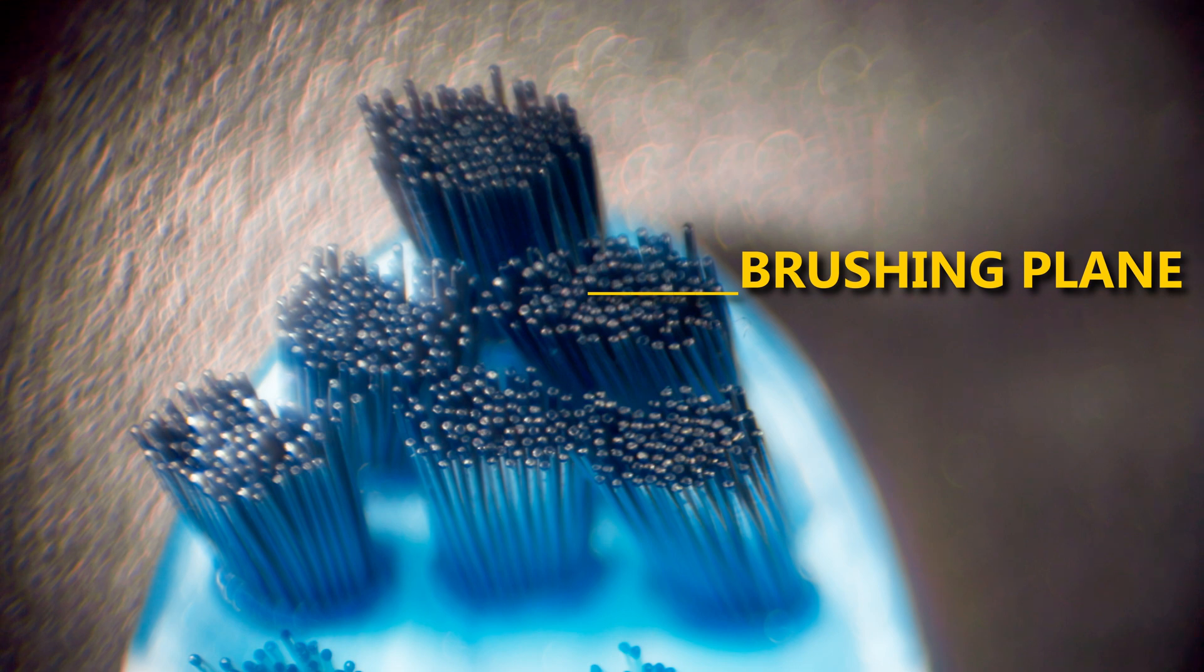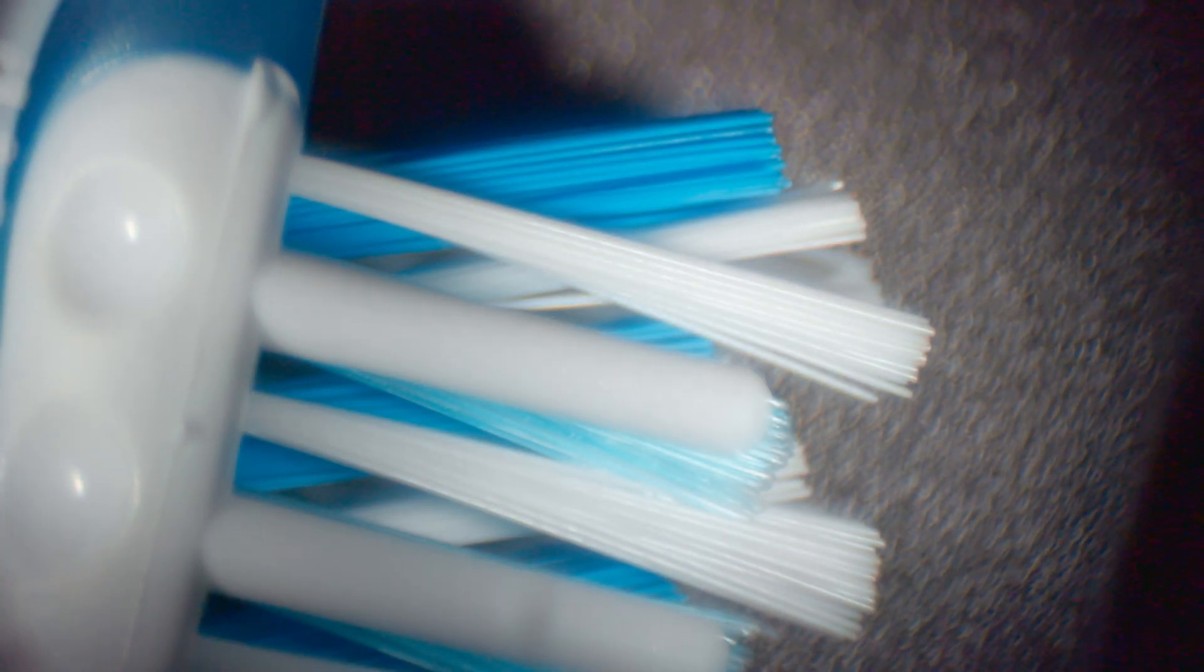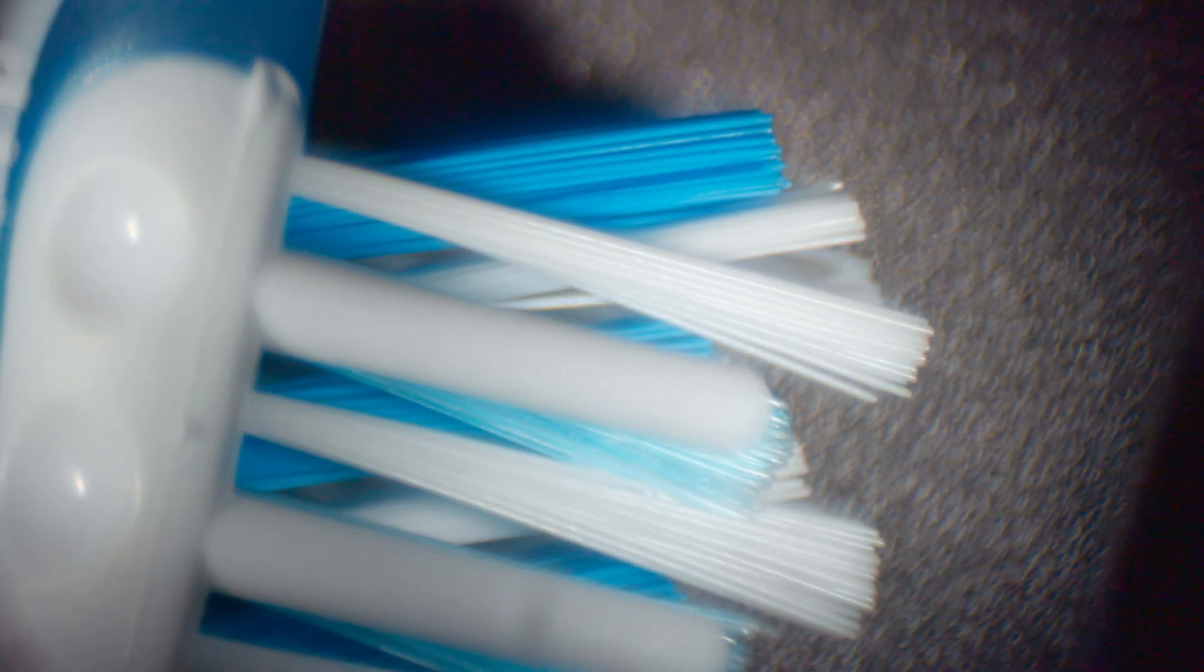When the toothbrush is old, bristles bend and the brushing plane diminishes. And this is the head of the toothbrush where it holds the roots of the bristles. The roots are where gunk such as toothpaste and food pieces accumulates over time. It becomes the perfect place for bacteria to flourish.